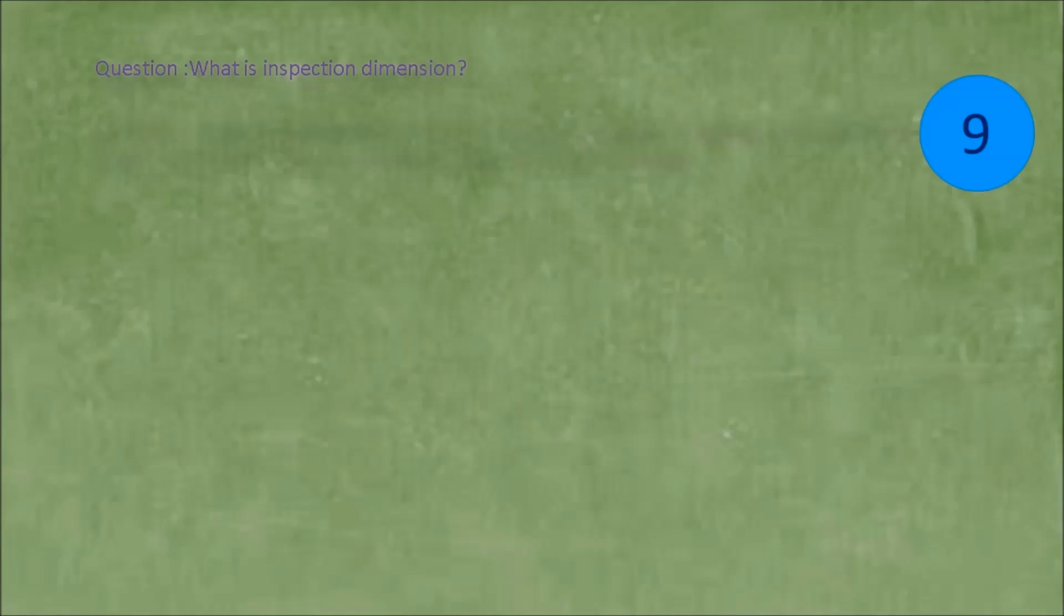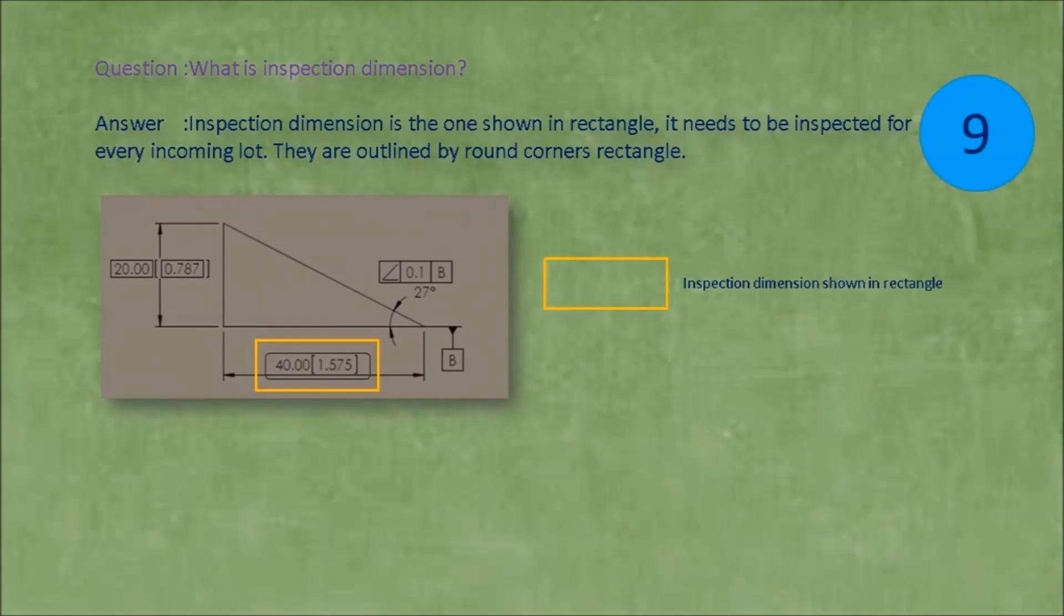Question: What is inspection dimension? Answer: Inspection dimension is the one shown in rectangle. It needs to be inspected for every incoming lot. They are outlined by round corners rectangle.